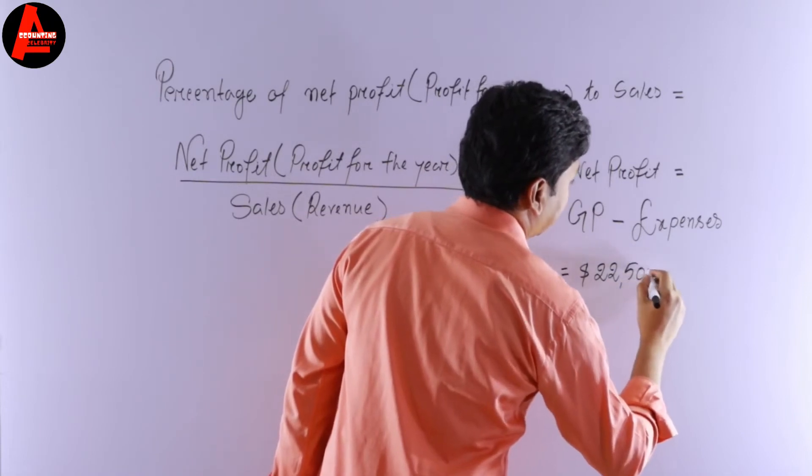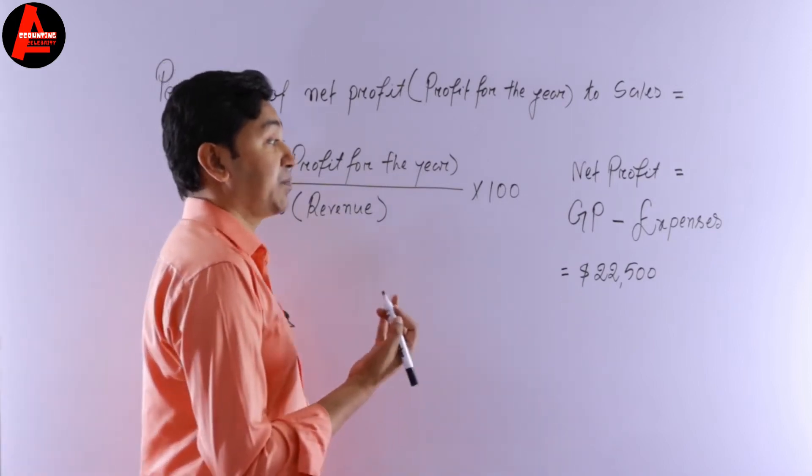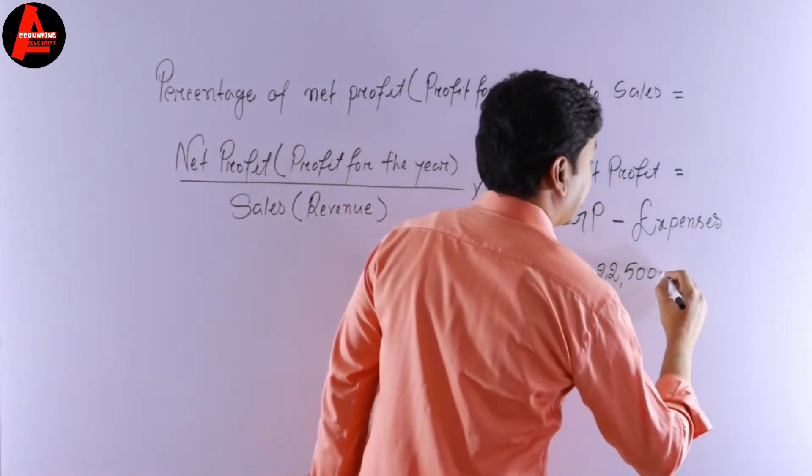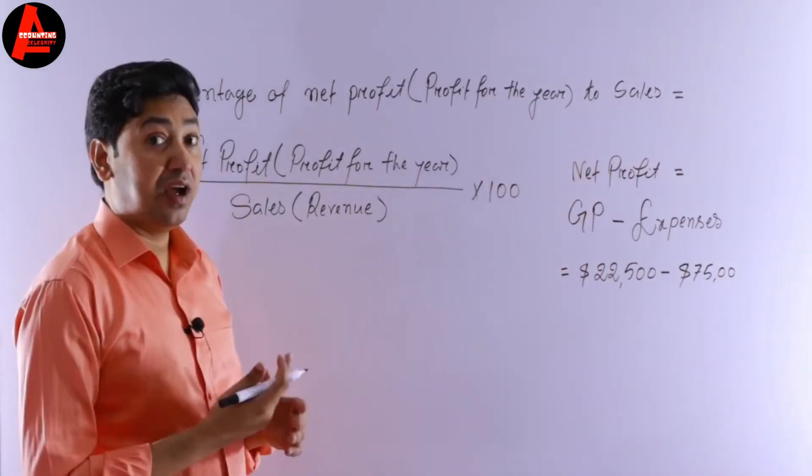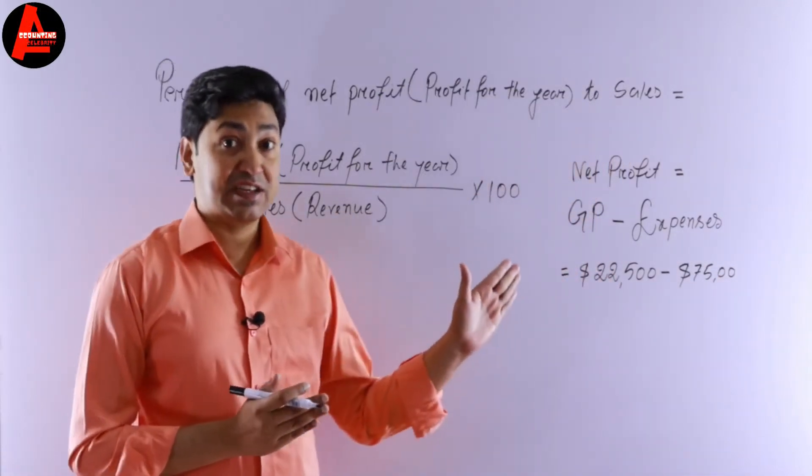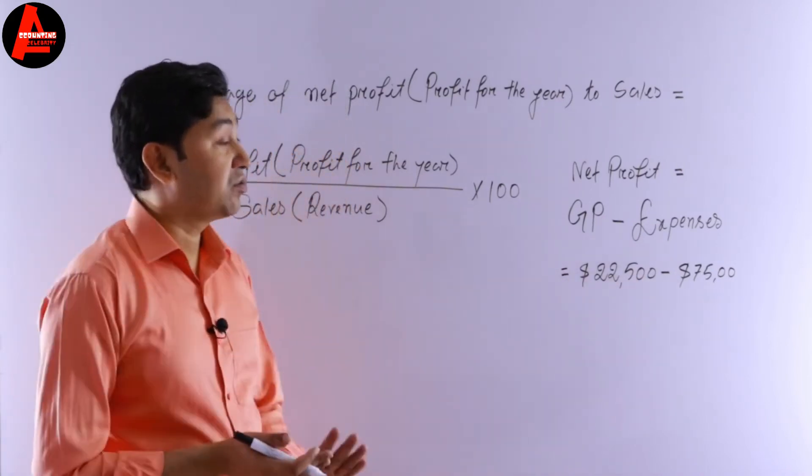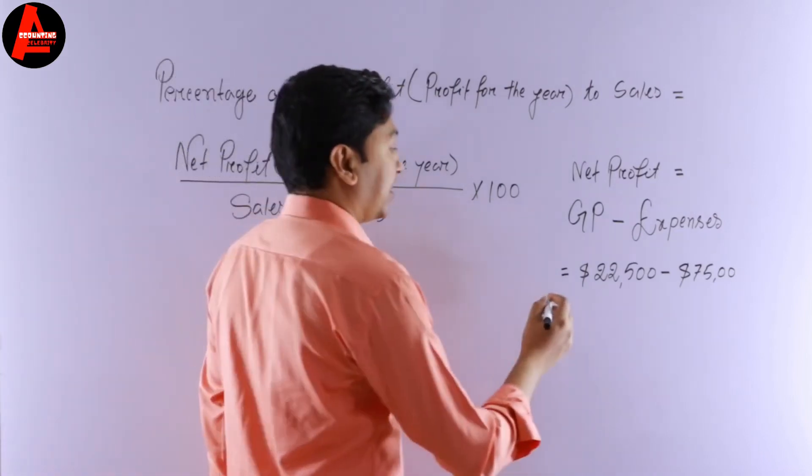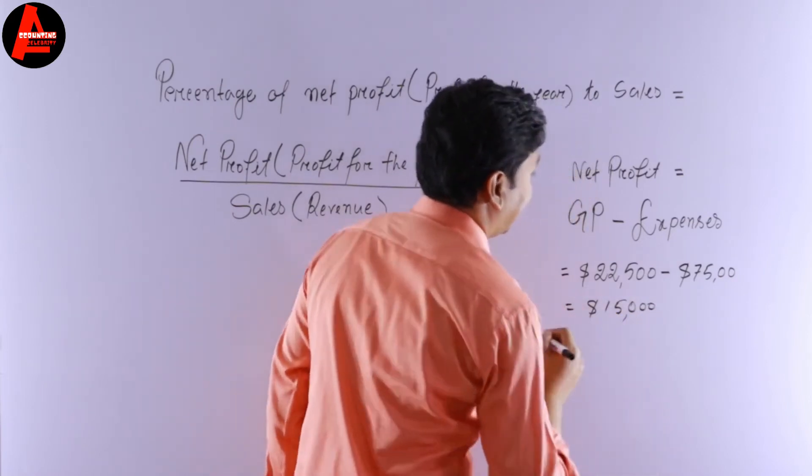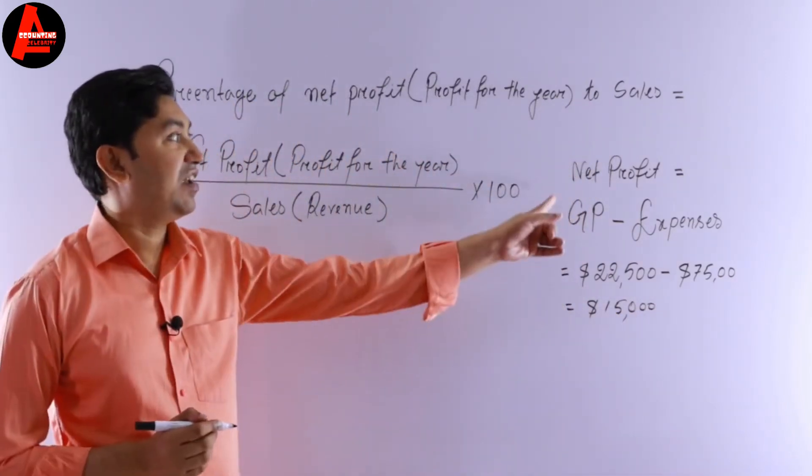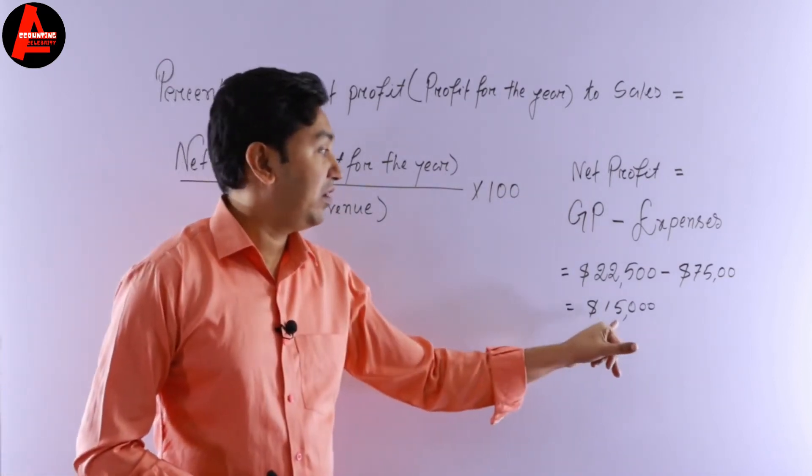There we calculated gross profit which was $22,500. Then we will subtract the expenses which is $7,500, given in the question. If we subtract this $7,500 from $22,500 we get $15,000. So this is our net profit or profit for the year.